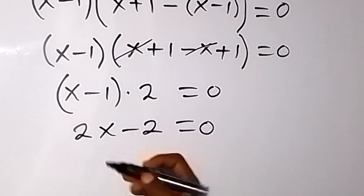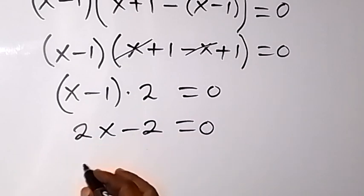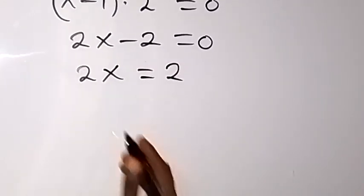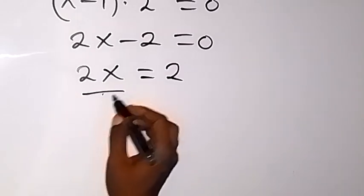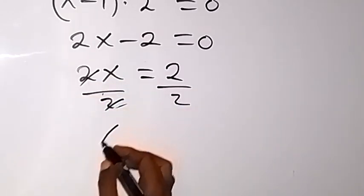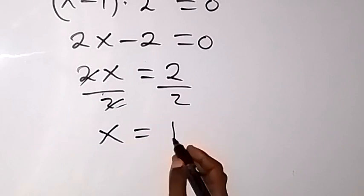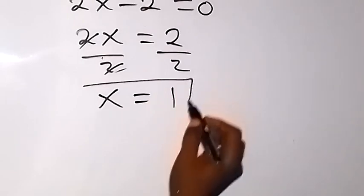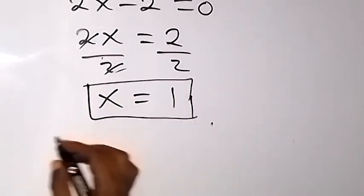And when we take minus 2 to this side, we have 2x now will be equals to 2. And since we are finding the value of x, dividing both sides by 2 from here so that 2 can cancel 2 here, and therefore x equals to 1.